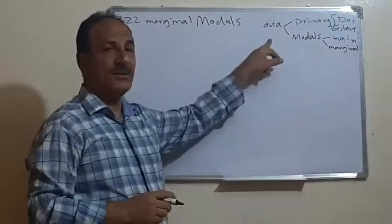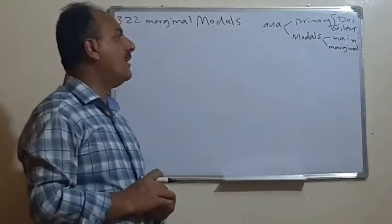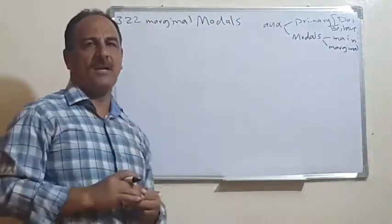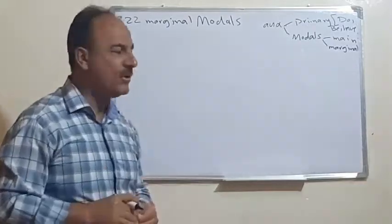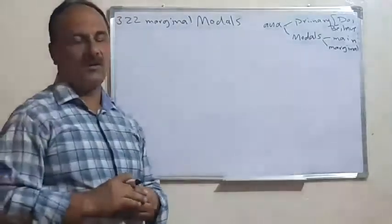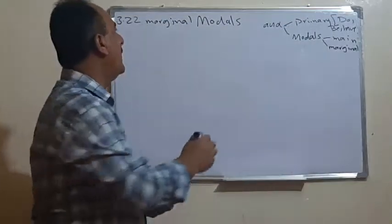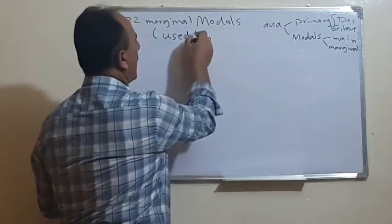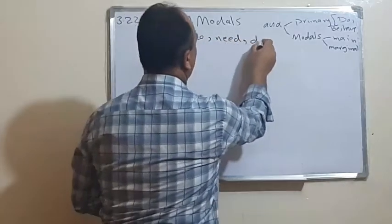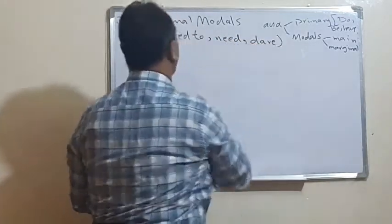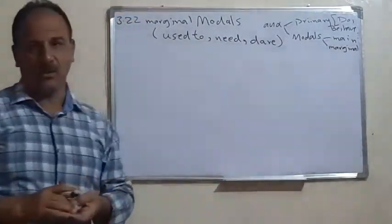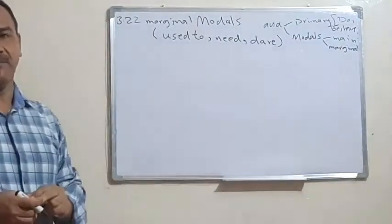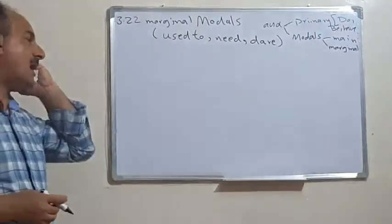The second type of models we call marginal models. The word 'marginal' means they are secondary, not very important. We have three examples of marginal models: the first one is 'used to', the second one is 'need', and the third one is 'dare'. These are called marginal models because especially 'need' and 'dare' can behave as lexical verbs sometimes and as marginal models other times.